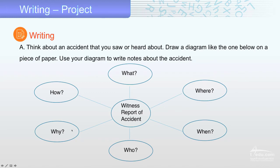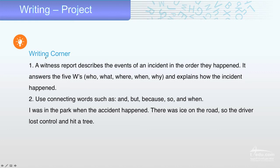Now, writing corner - very important information. A witness report describes the events of an incident in the order they happened. It answers the five W's: who, what, where, when, and why, and explains how the incident happened.